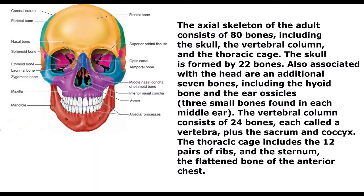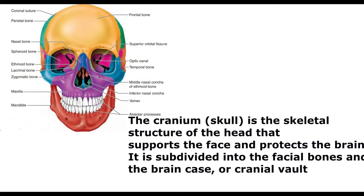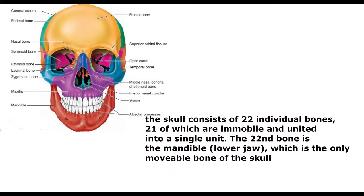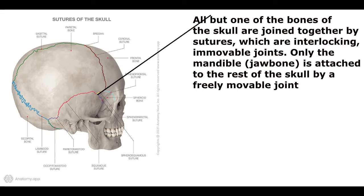The cranium, or skull, is the skeletal structure of the head that supports the face and protects the brain. It is subdivided into the facial bones and the brain case, or cranial vault. In the adult, the skull consists of 22 individual bones, 21 of which are immobile and united into a single unit. The 22nd bone is the mandible, or lower jaw, which is the only movable bone of the skull. All but one of the bones of the skull are joined together by sutures, which are interlocking, immovable joints. Only the mandible, or jawbone, is attached to the rest of the skull by a freely movable joint.